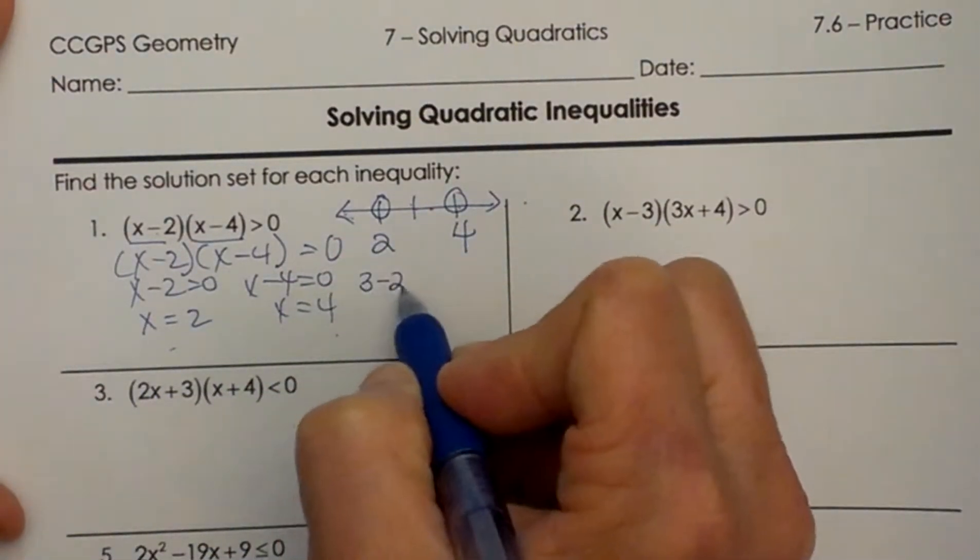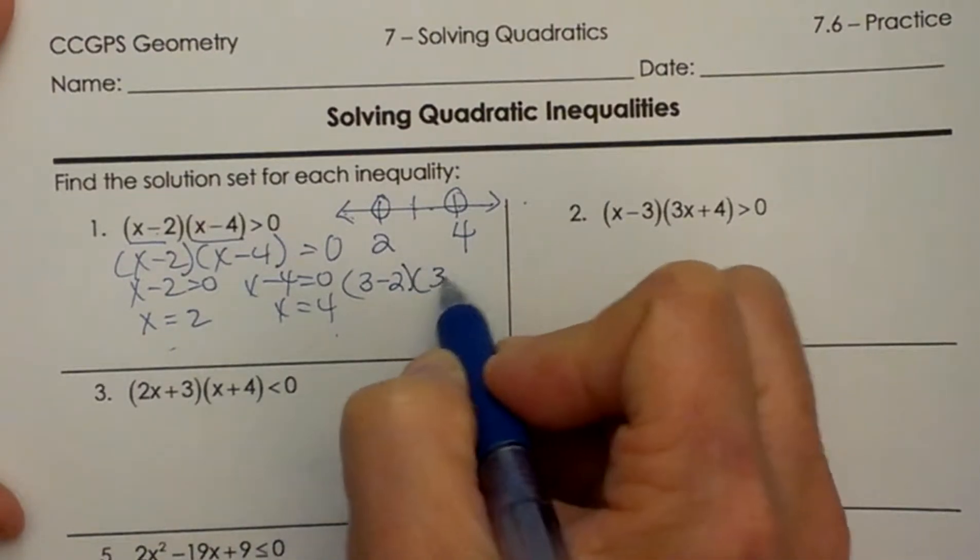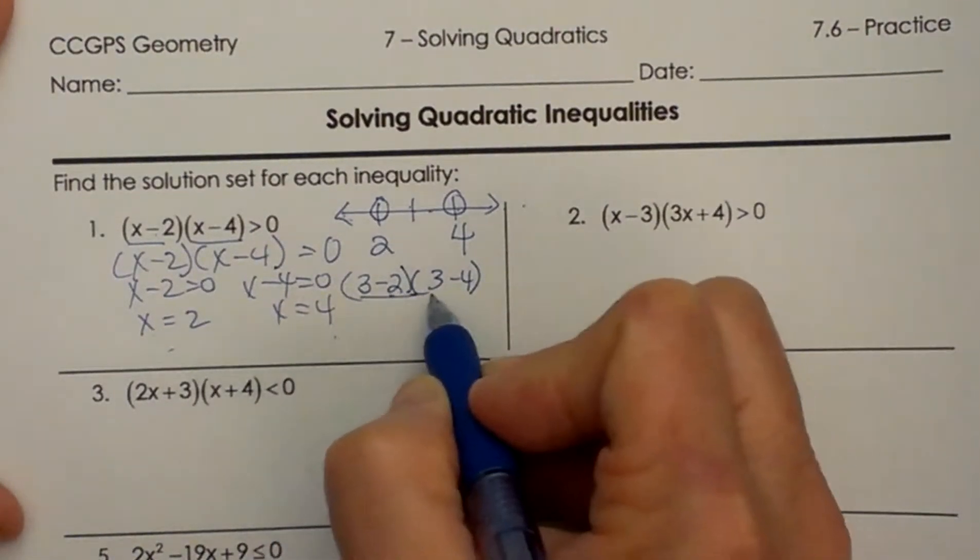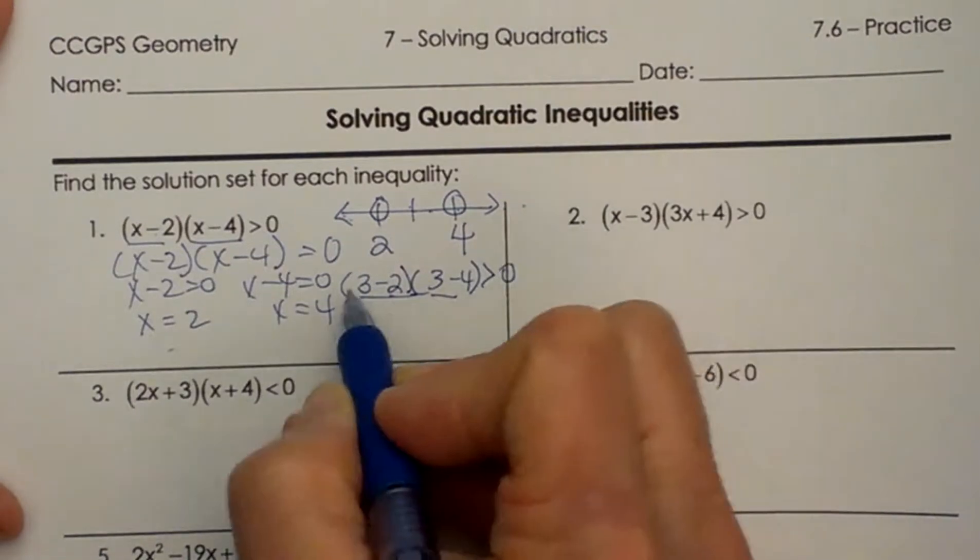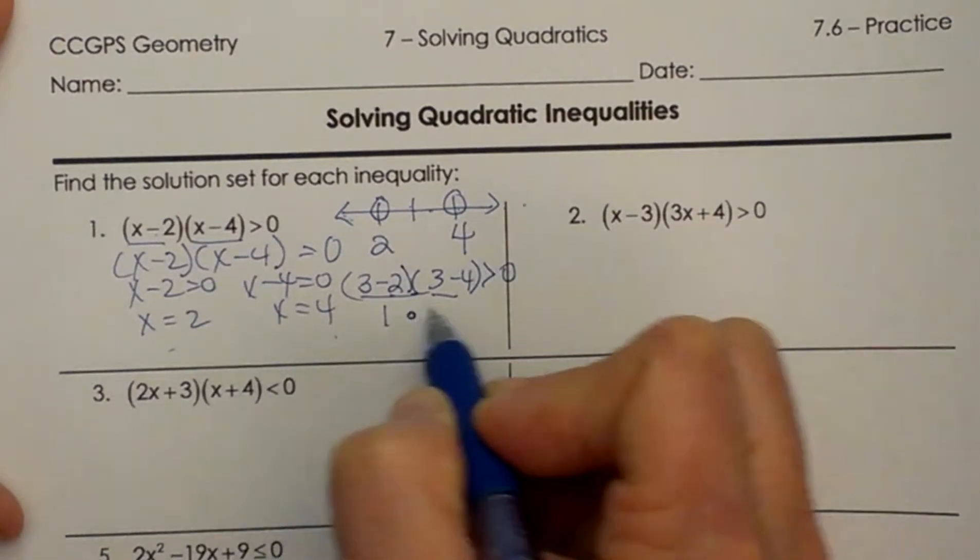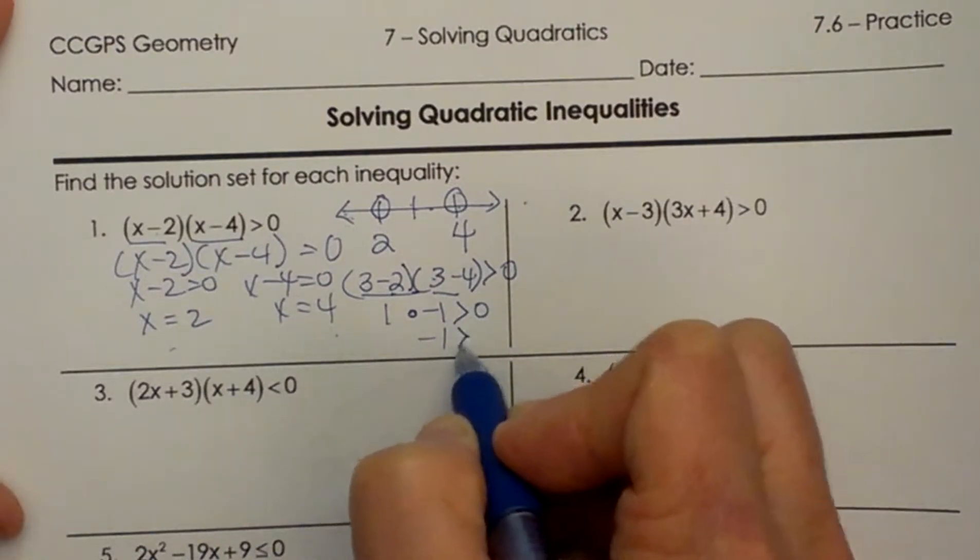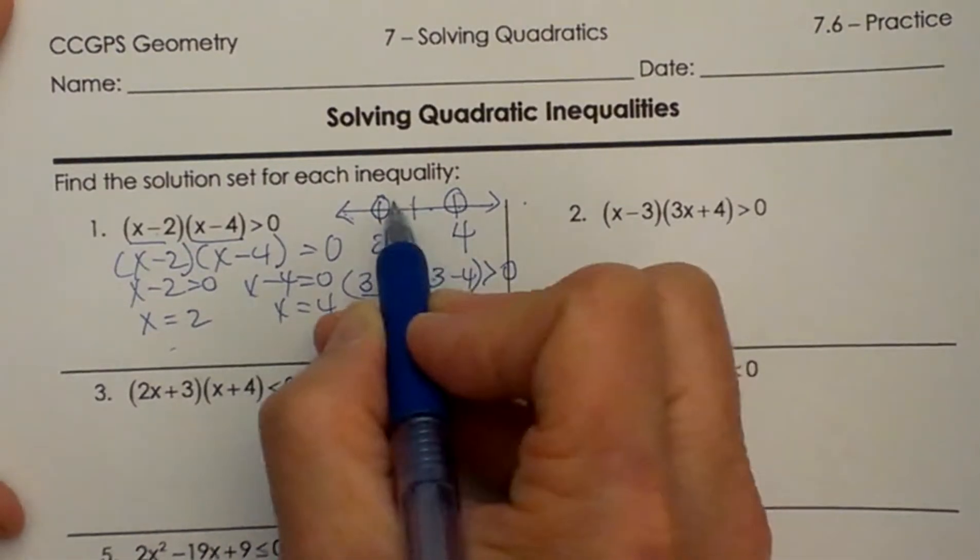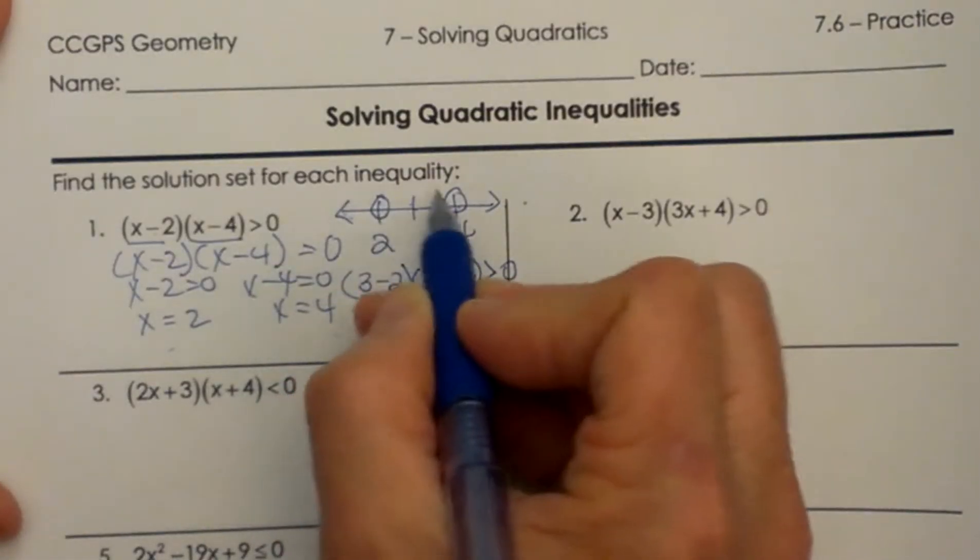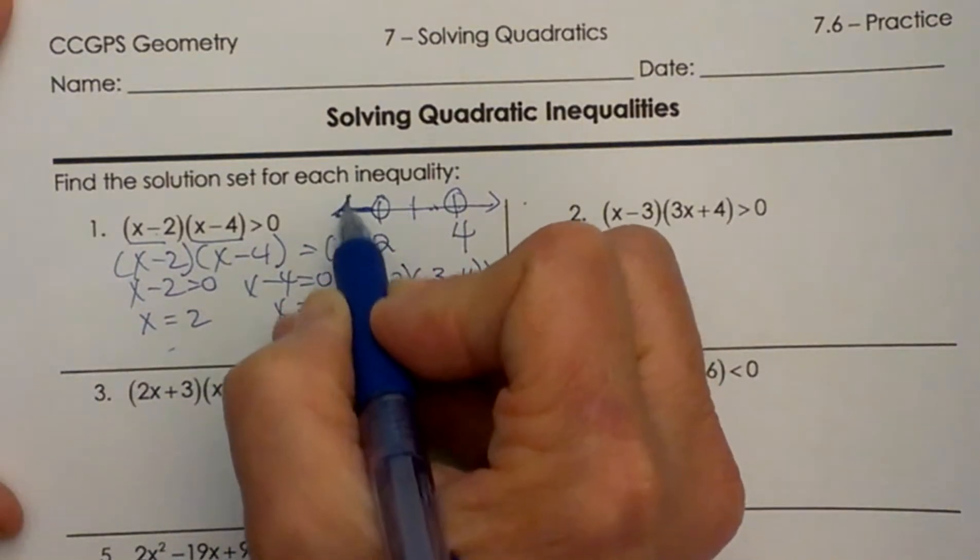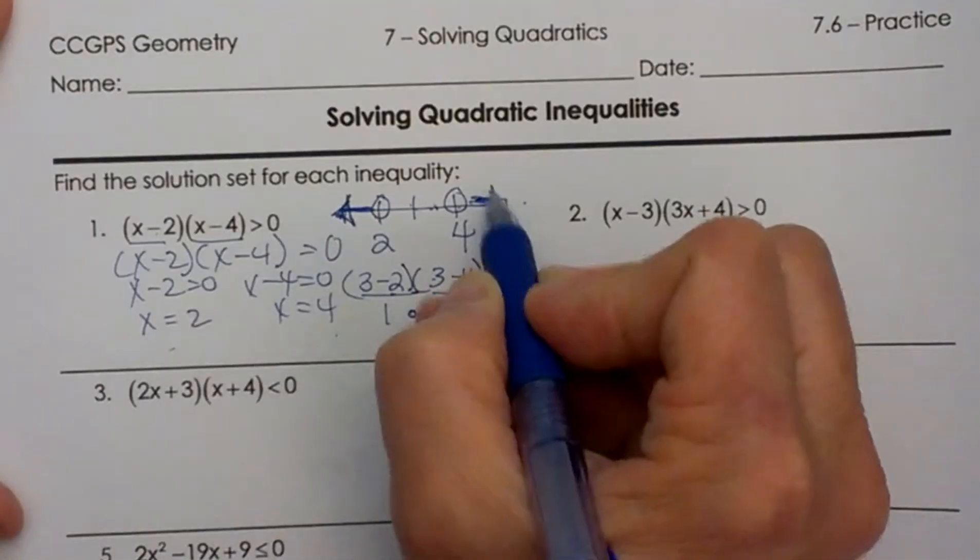3 minus 2 and 3 minus 4. When I take the product of these two is that greater than 0? That is 1 times negative 1. Is that greater than 0? Negative 1 greater than 0? No. So that means this region is not shaded. That means I am going to shade the other two regions. I am going to shade on the outside.